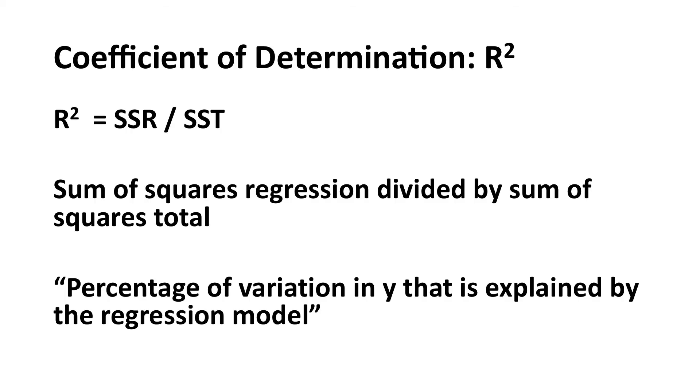So if you have a regression model where there are very small residuals, you have a high r squared, whereas if you have a model where there are very, very large residuals, the r squared is low. And this r squared can be interpreted as the percentage of variation in y, which is the dependent variable, that is explained by the regression model.